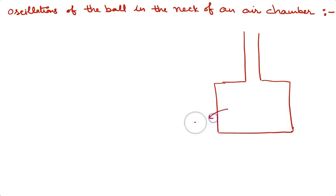Here we have air. Let us suppose that volume of this chamber is V. This neck is very narrow as compared to this total volume. Let us suppose that area of cross section of this neck is A.